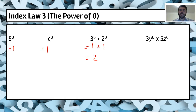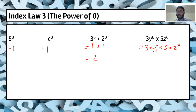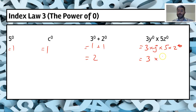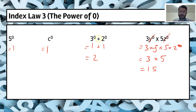One plus one equals two. For the last example: three y to the power of zero times five z to the power of zero. Breaking it down: three times y to the power of zero, multiplied by five times z to the power of zero. y to the power of zero is one, so three times one is three; z to the power of zero is one, so five times one is five. That gives three times five, which equals fifteen.